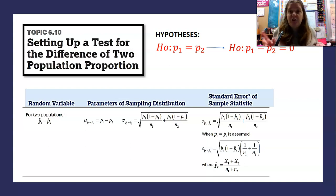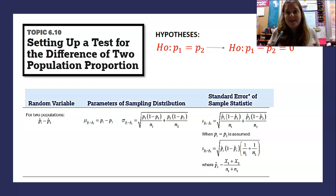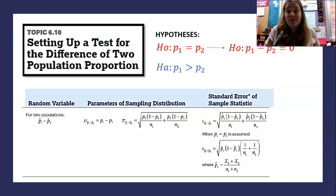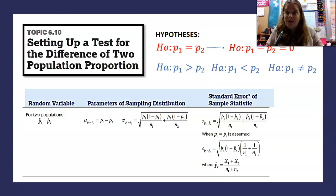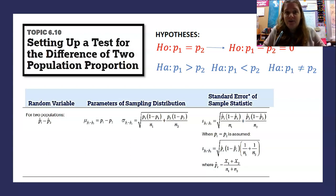So we've got this null hypothesis P1 equals P2, or you can write it as a difference equal to zero. For the alternate hypothesis, you could say that the first proportion is greater than the second, less than the second, or that they're not equal — which would coincide with greater than zero, less than zero, or not equal to zero if written as a difference.